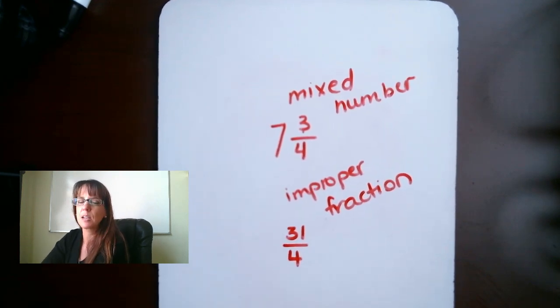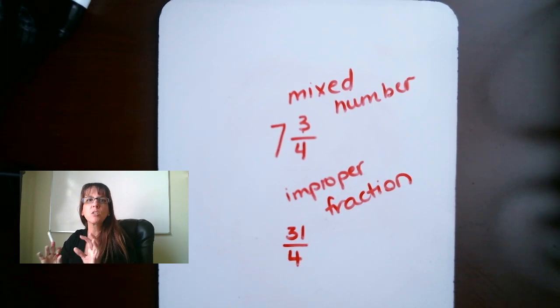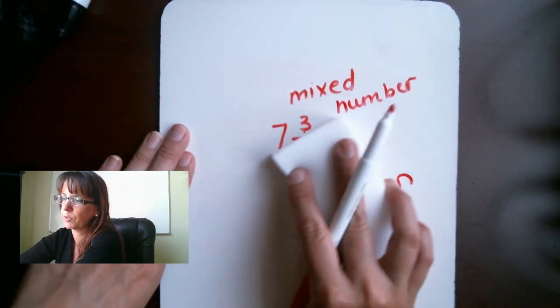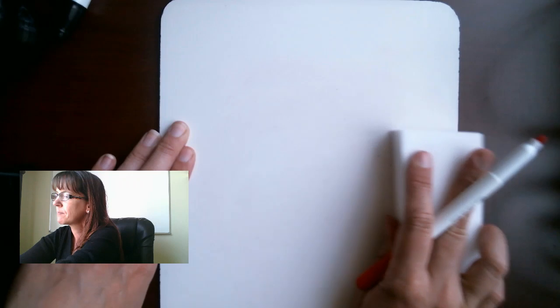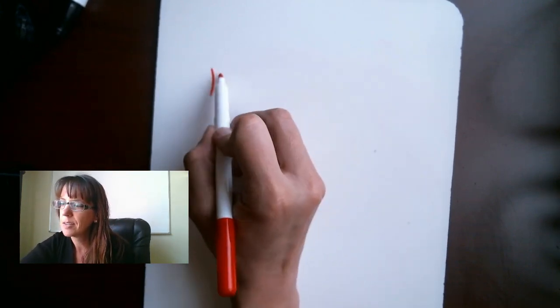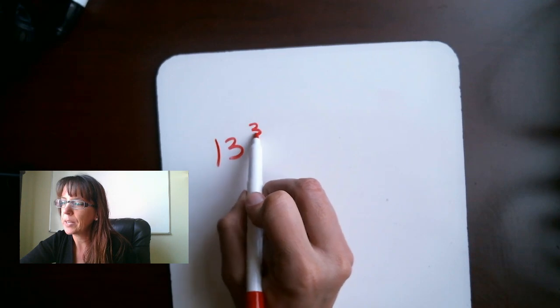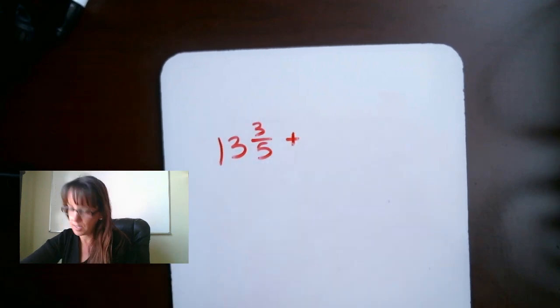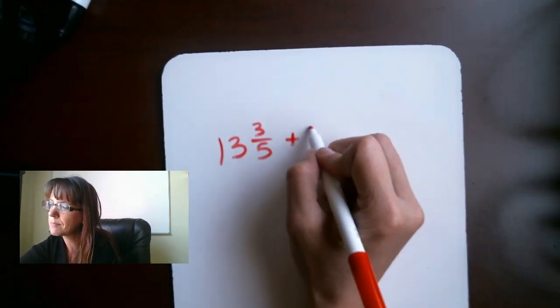This skill is important to have when you're adding and subtracting fractions, because if you have mixed numbers, it's going to be a lot easier. But there are two different methods of doing this, so we're going to start by doing the improper fraction first. The improper fraction method. Then we'll talk about some borrowing and some other fun stuff there. Okay, let's see, why don't we do 13 and 3 fifths plus 2 and 1 eighths.